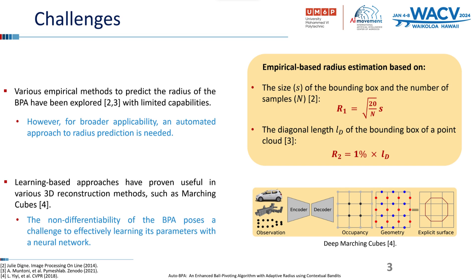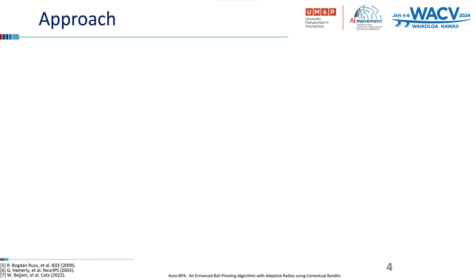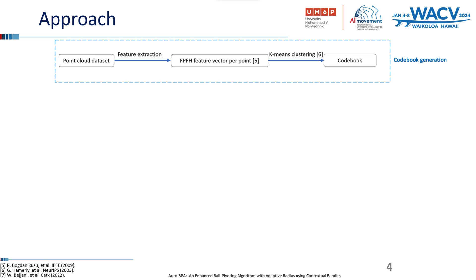In this paper, we propose an automated method for predicting the radius of the BPA, potentially leveraging learning-based techniques to enhance accuracy and applicability across various contexts. Our proposed approach, Auto-BPA, combines established techniques — FPFH and k-means — with innovative strategies such as the contextual bandits algorithm.